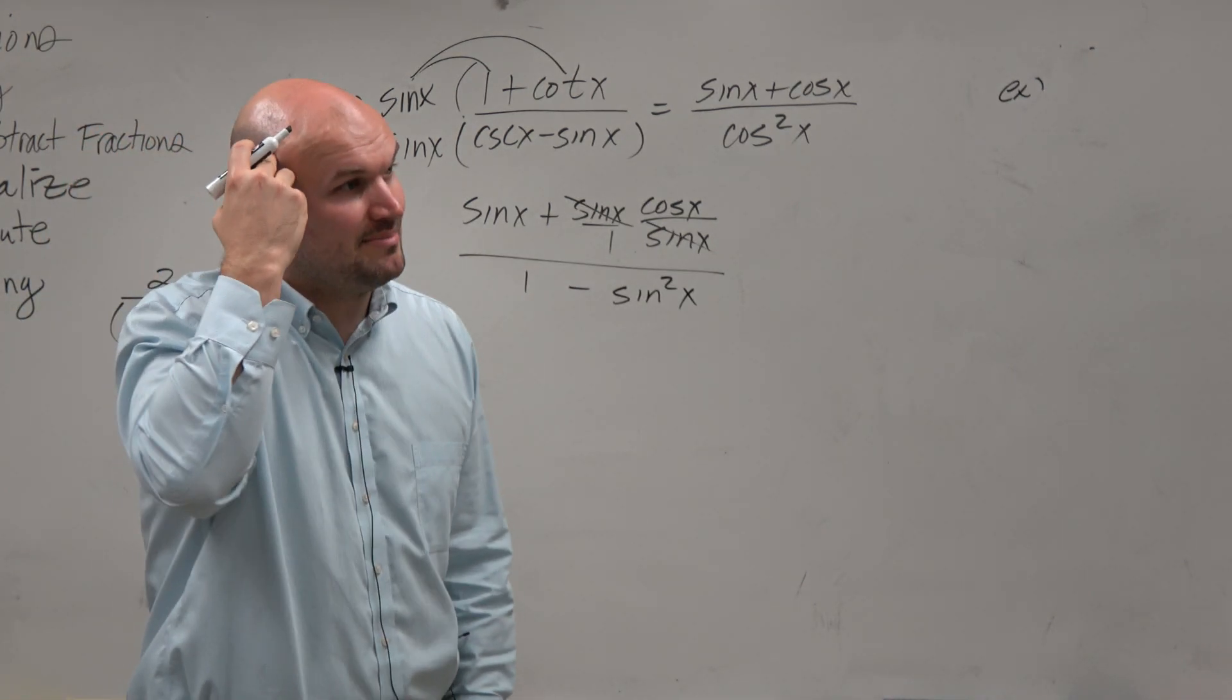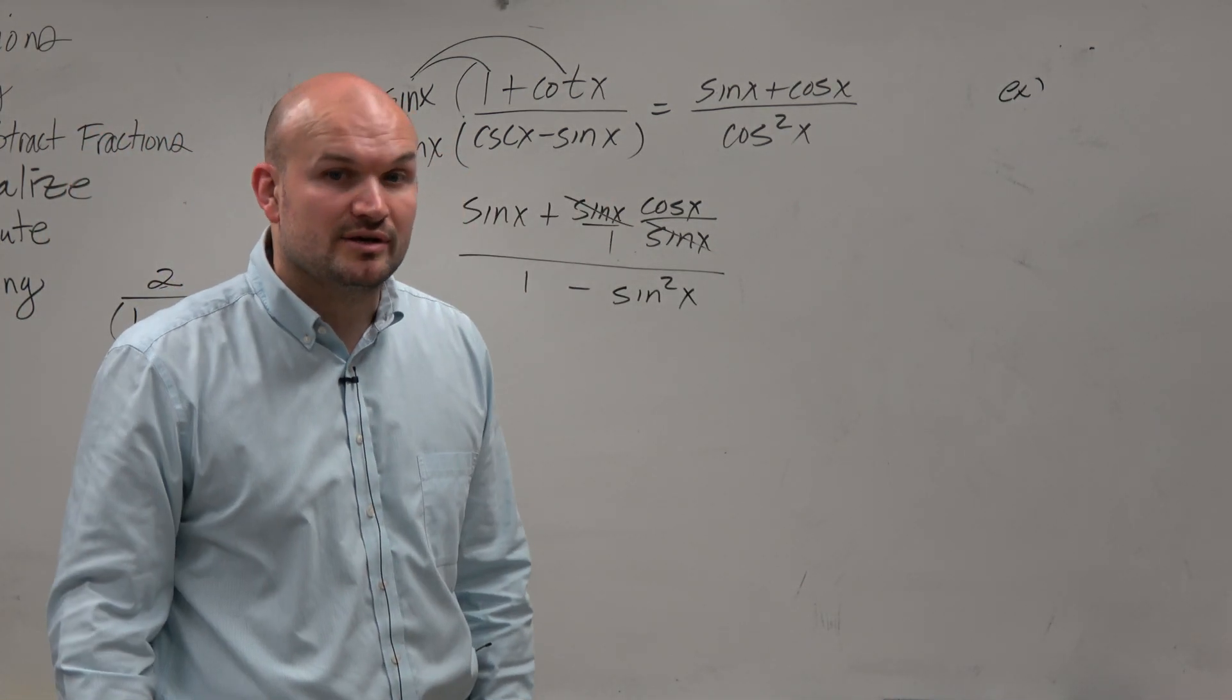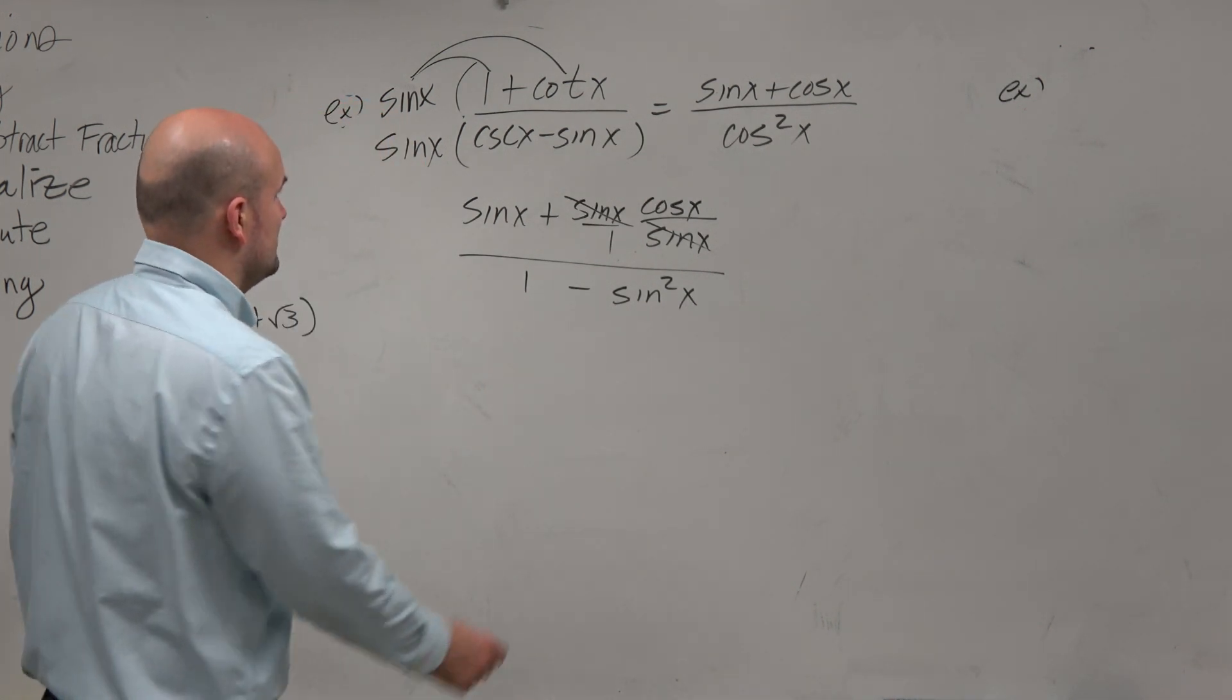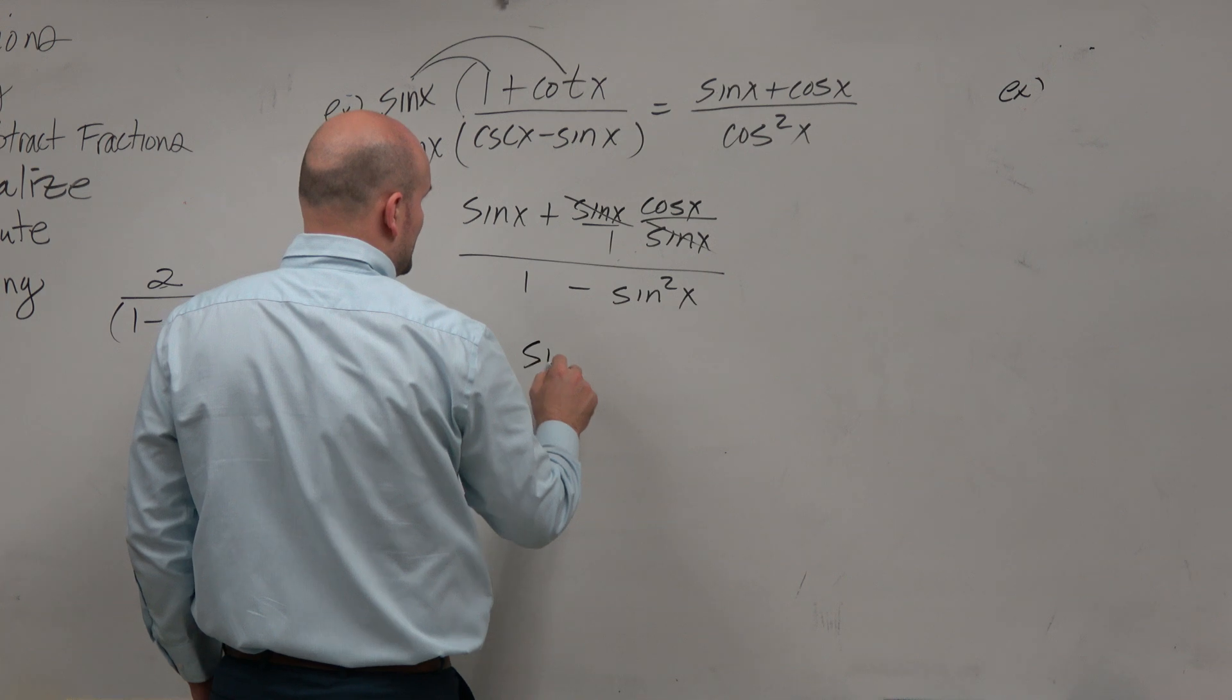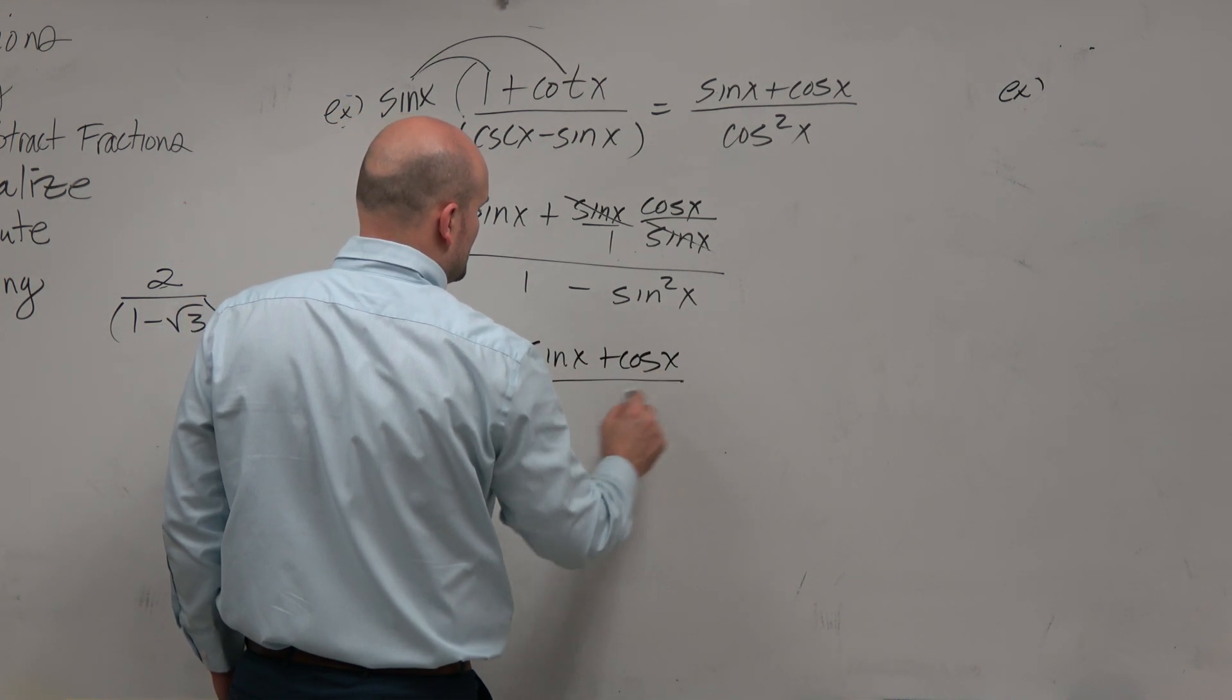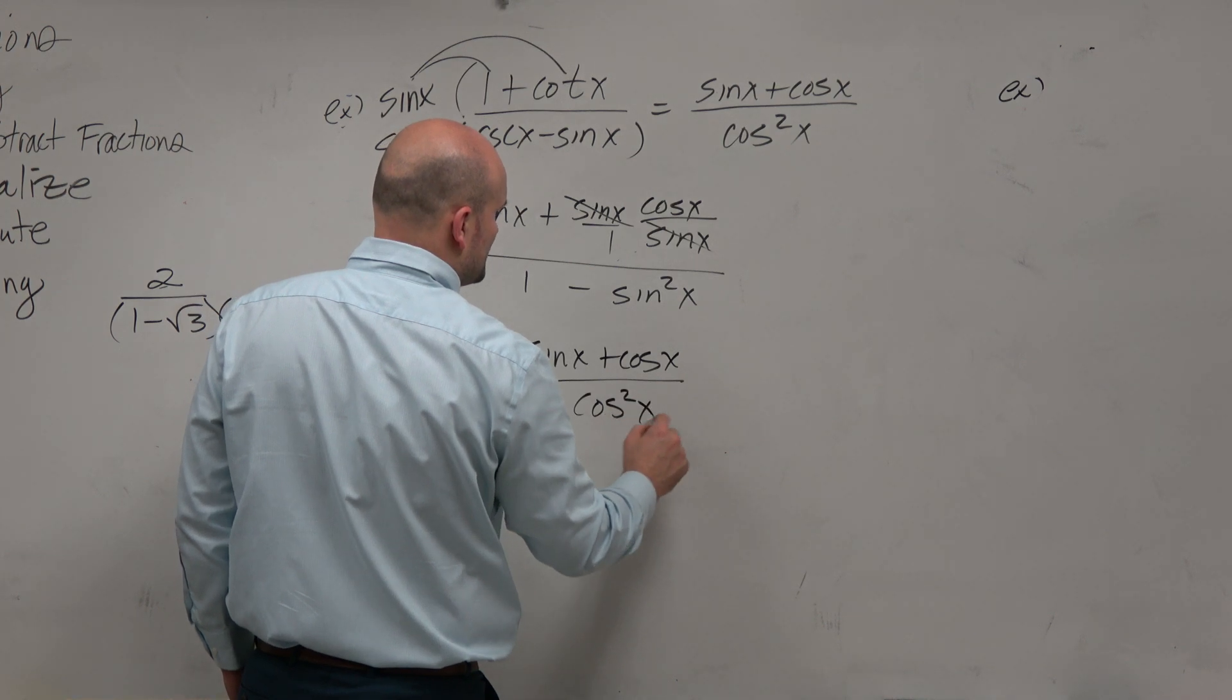And I think, oh, I like that, because that is, again, another Pythagorean relationship, which produces cosine squared. So therefore, I'm left with sine of x plus cosine of x all over cosine squared of x.